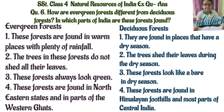Question number 6. How are evergreen forests different from deciduous forests? In which parts of India are these forests found? Evergreen forests: First, these forests are found in warm places with plenty of rainfall. Second, the trees in these forests do not shed all their leaves. Third, these forests always look green. They are found in northeastern states and in parts of the Western Ghats.